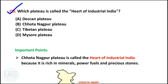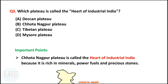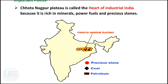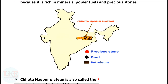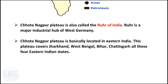Question number 3 — very important: which plateau is called the heart of industrial India? A. Deccan Plateau, B. Chotanagpur Plateau, C. Tibetan Plateau, D. Mysore Plateau. Right answer option B: Chotanagpur Plateau. Chotanagpur Plateau is located at this exact place on the map of India. It is called the heart of industrial India because it is rich in minerals, power fuels and precious stones. For all these reasons, Chotanagpur Plateau is also called the Ruhr of India.